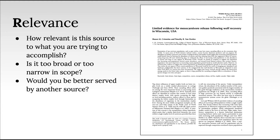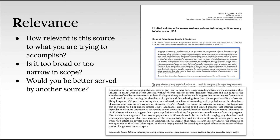First of all, is the source relevant? To determine relevance, we might consider the following questions: How relevant is this source to what you are trying to accomplish? Is it too broad or too narrow in scope? Would you be better served by another source? Here's a pro tip: if an abstract is available, read it in order to determine whether the source suits your purposes. An abstract is a paragraph that summarizes an article's argument and is typically included in scholarly articles.